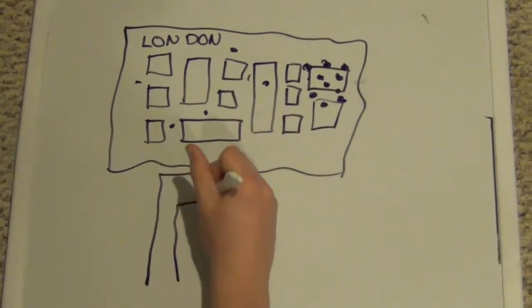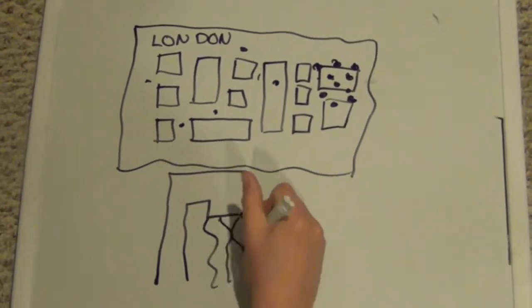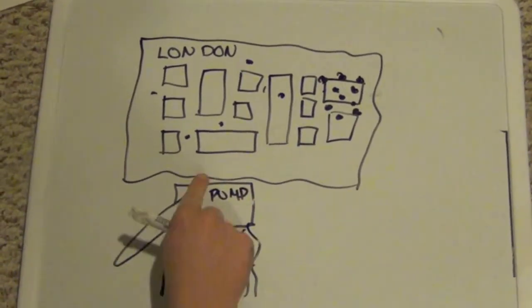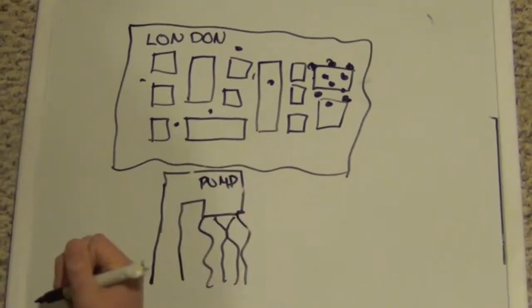I drew a map and marked the outbreaks. There were a few here and there, but most were in one area. I soon concluded that the Broad Street water pump was the source of the outbreak. I thought that the pump handle should be immediately removed.